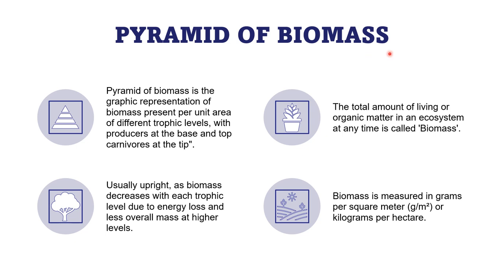The pyramid of biomass is a graphical representation of how much biomass is present at each trophic level — producers, herbivores, and carnivores — showing the amount of living organic matter at each level in the ecosystem. Usually, the biomass pyramid is broad at the base, and the amount of biomass decreases gradually as we move up.